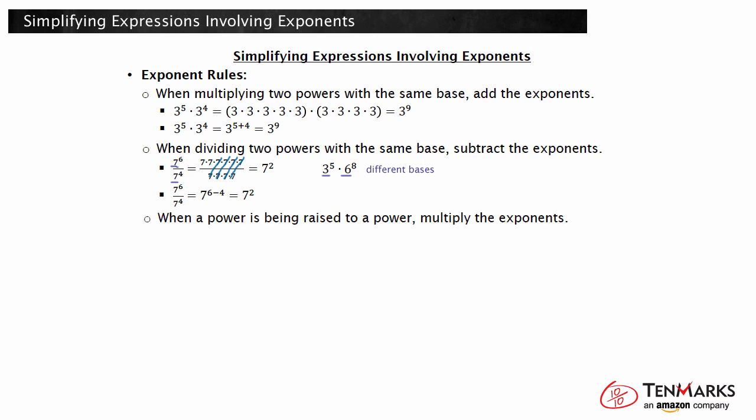When a power is being raised to a power, the exponents are multiplied. For example, the expression 2 to the third to the fifth power would be 2 to the third times itself 5 times. If you add all those exponents, you get 15. So the expression can be written as 2 to the fifteenth power. As you can see, you could have multiplied the exponents 3 times 5 to get the exponent of 15.